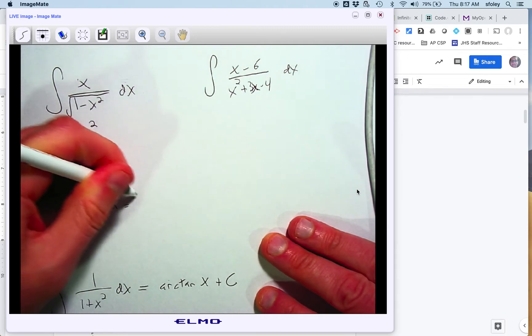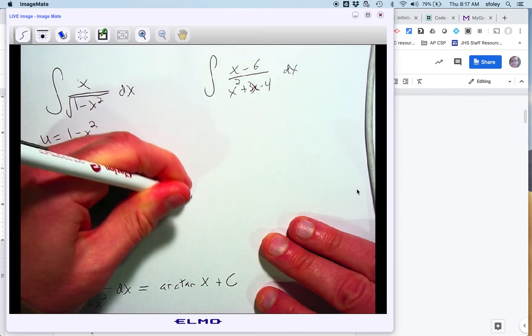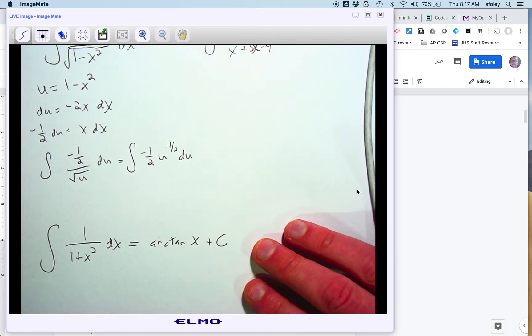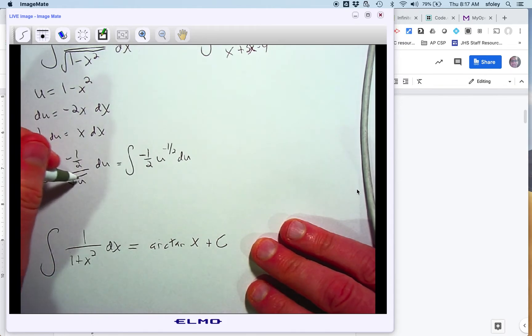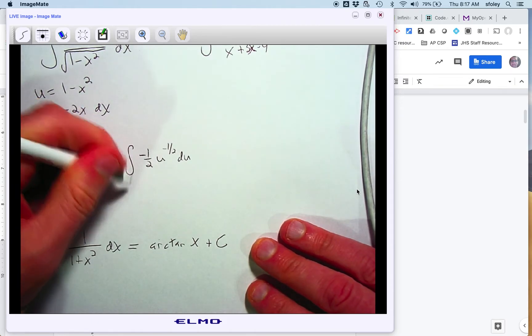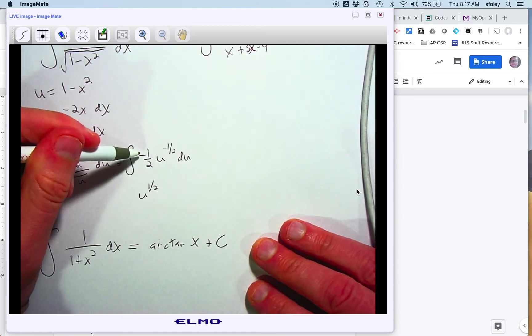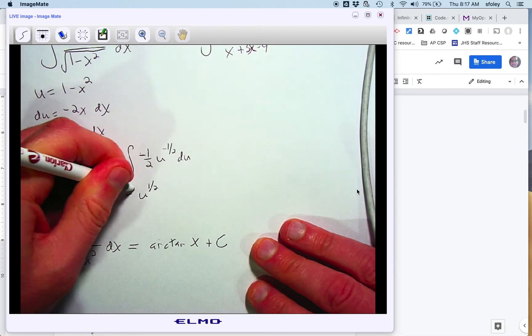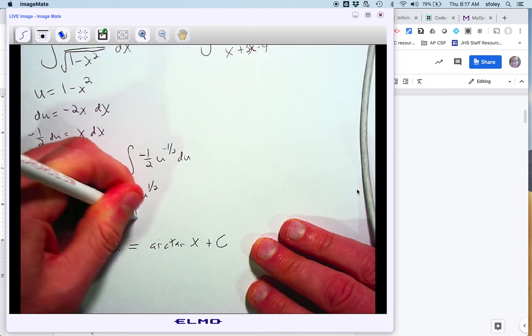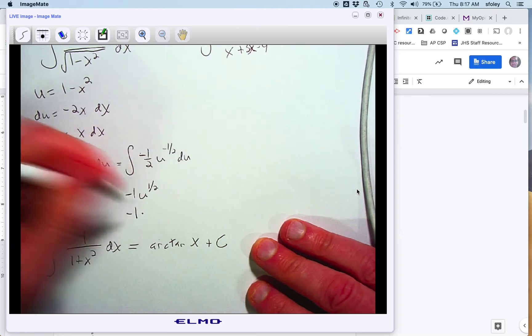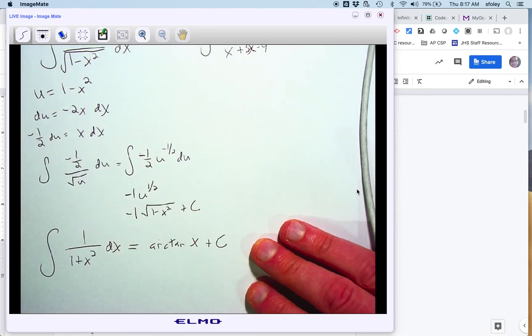Still has a little bit of thinking left to do. Square root of u on the bottom is u to the negative 1 half. This is not a natural log problem, because it's not something to the first power on the bottom, so I'm just going to do the power rule. So I add 1 to the power, and then divide by that new power, so negative 1 half divided by 1 half is negative 1. And then I remember what u equaled. u was 1 minus x squared, and so I end up with this, with of course plus c at the end.